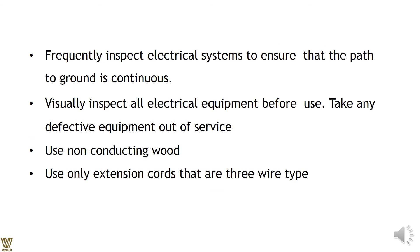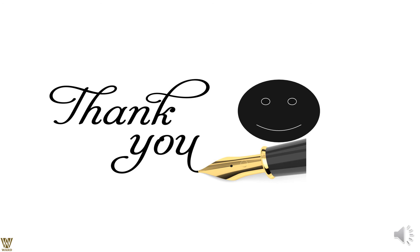Visual inspection is a must — a simple glance can reveal missing components or equipment burned by high temperature. Use non-conducting materials such as wood or rubber as foot covering. Always use three-wire extension cords (red, black, and green/yellow), which ensures proper earthing. With these precautions in mind, this presentation on preventive measures for fire and electrical safety comes to an end. Thank you for watching.